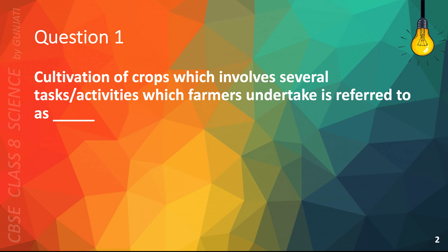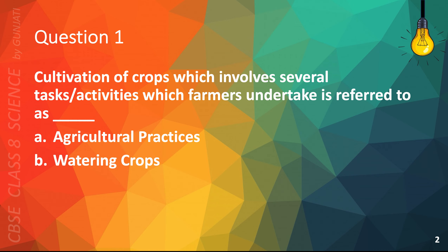Question 1. Cultivation of crops which involves several tasks or activities which farmers undertake is referred to as: A. Agricultural practices, B. Watering crops, C. To do, or D. Reminders. The correct answer is A. Agricultural practices.